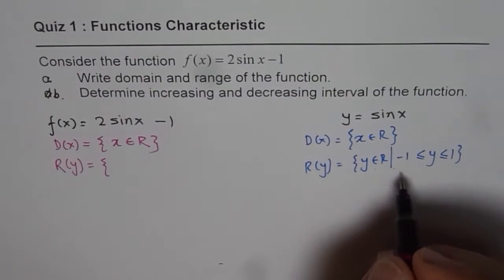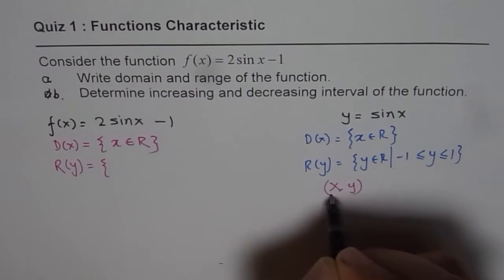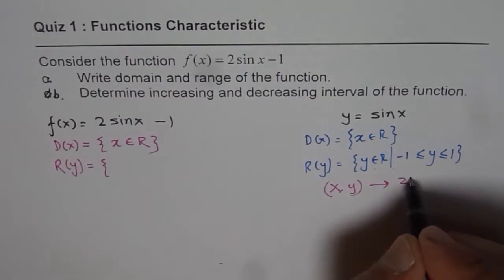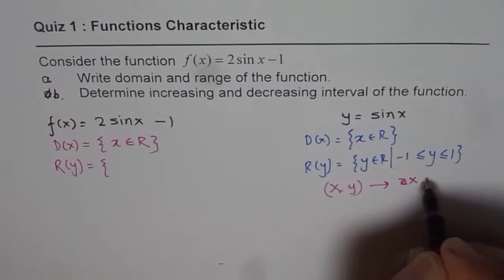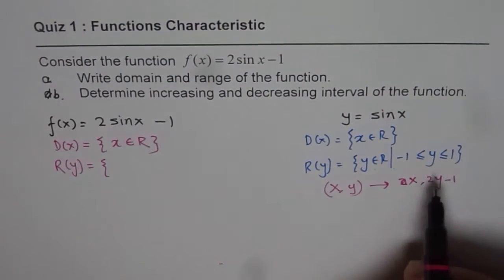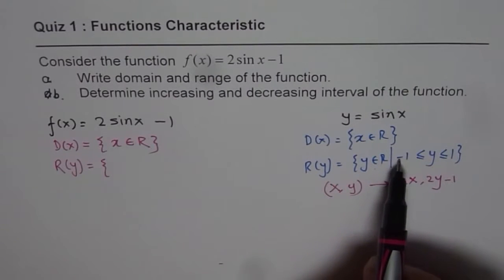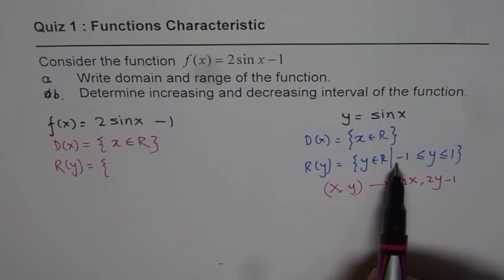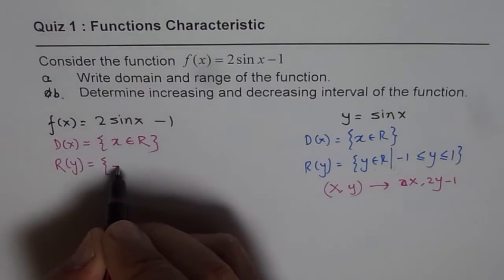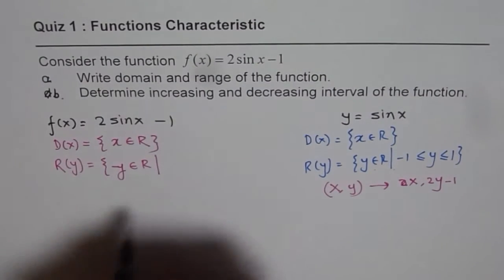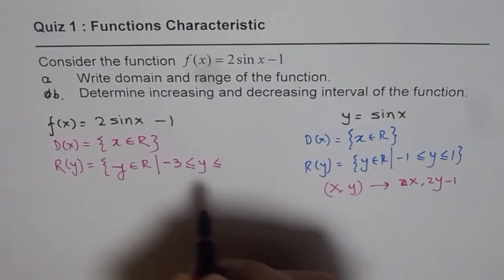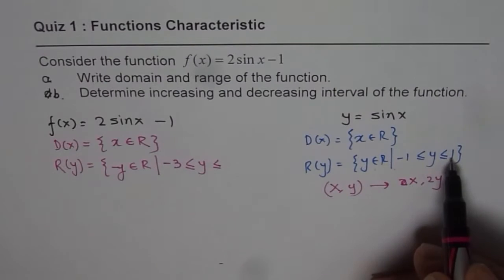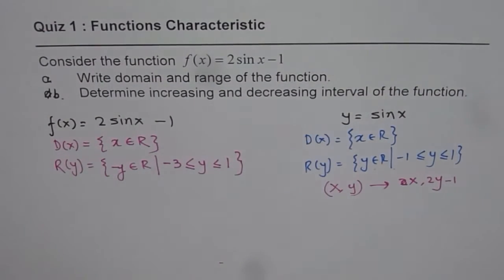The transformation maps y-points to 2y − 1. So the x-points are the same, but the y-points become 2·y − 1. Taking the minimum: 2·(−1) − 1 = −2 − 1 = −3. Taking the maximum: 2·(1) − 1 = 2 − 1 = 1. So the range is y belongs to real numbers where y is between −3 and 1.